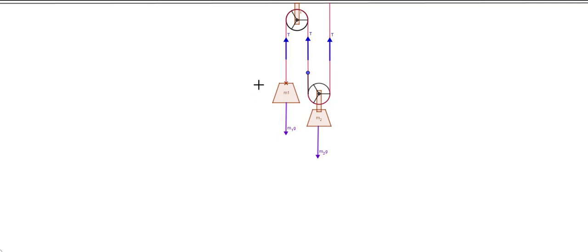With the free body diagram drawn, we can write Newton's second law for each object. For M1, we have one tension force upward and gravity downward: −M1g + T = M1·a1. For M2, we have two tension forces upward and gravity downward: −M2g + 2T = M2·a2. So we want to find the relationship between the accelerations and the masses, as well as what T equals.